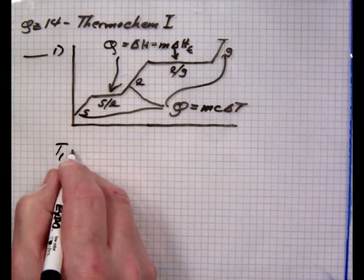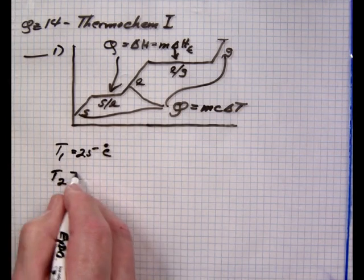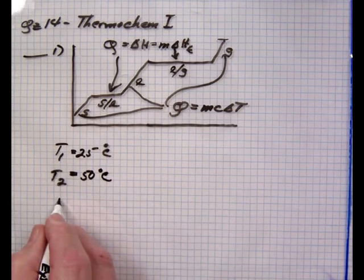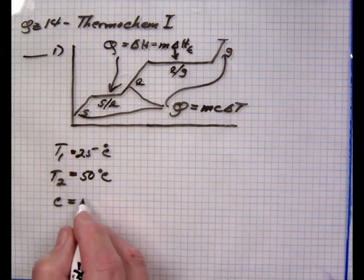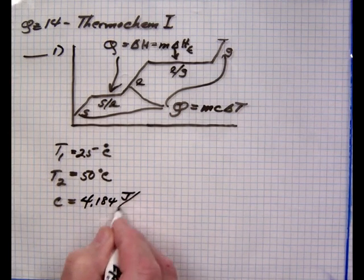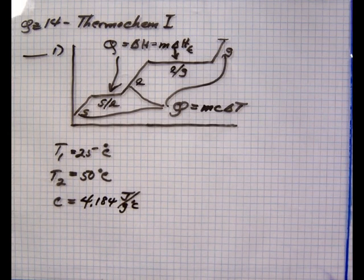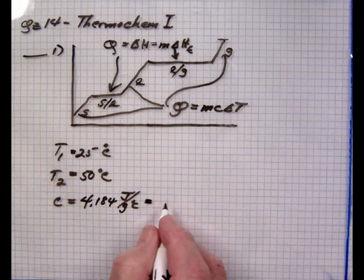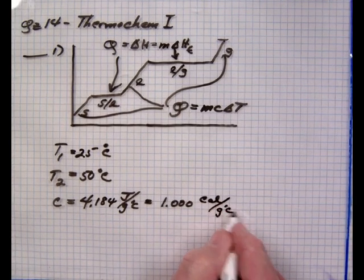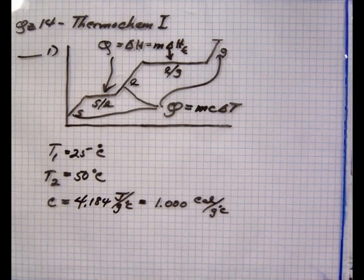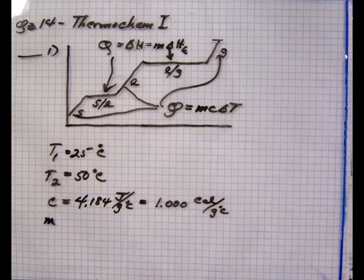T1 was equal to 25 degrees C, T2 equals 50 degrees Celsius. C is specific heat, the amount of energy necessary to raise the temperature of a pure substance one degree Celsius. That can be one calorie or 4.184 joules. So that's joules per gram per degree Celsius. This is also 1.000 calorie per gram degree Celsius. The mass is 50 gram sample of water.